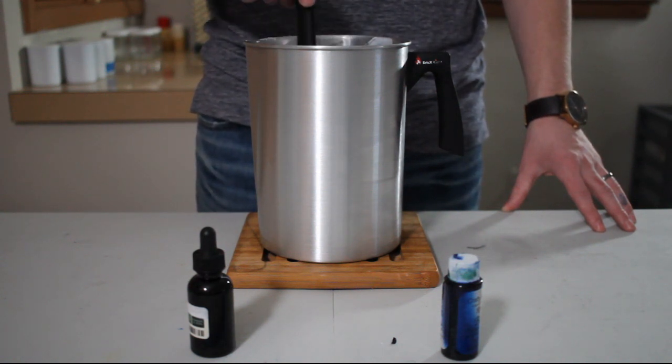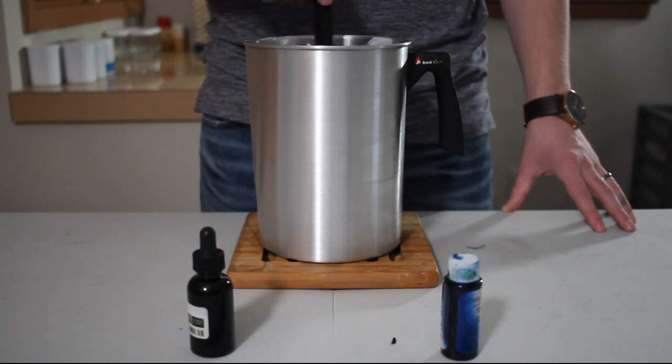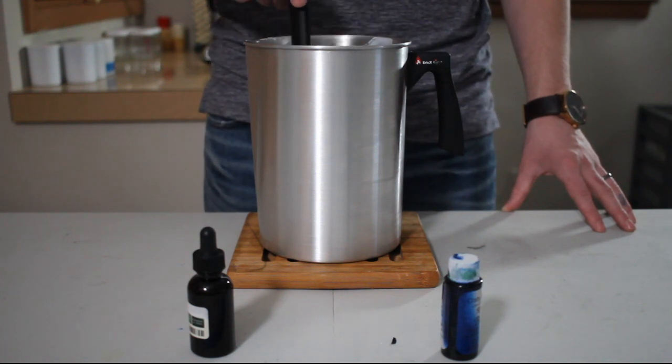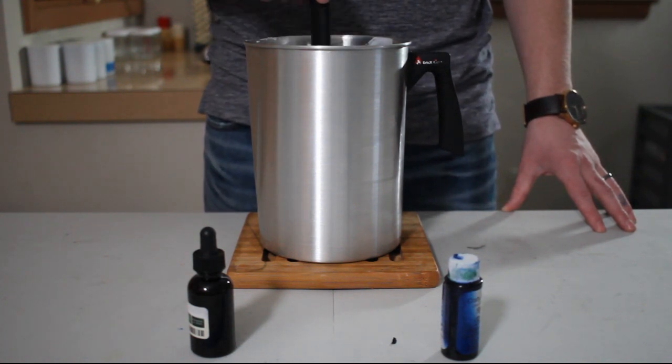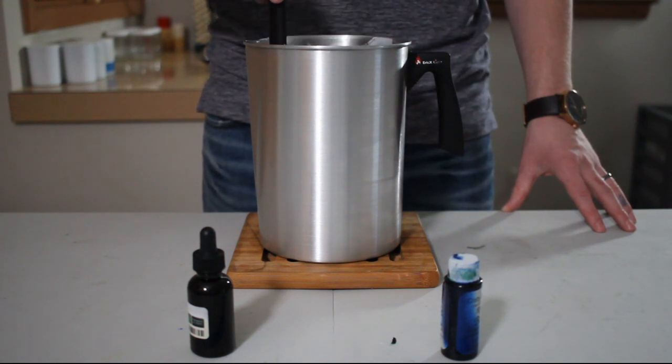Remember that fragrance oil doesn't actually chemically bind with wax and so we want to trap it in between the solid matrix of the wax as it cools down. The more expanded the wax is the more we can trap that. That's why we stir for so long too, to make sure that we evenly disperse that fragrance oil within the wax so as we begin to cool down we can trap it in the matrix of the solid wax.